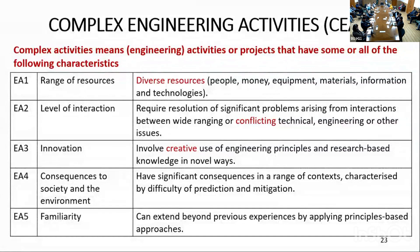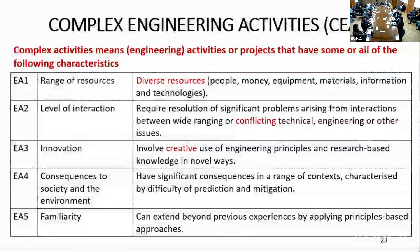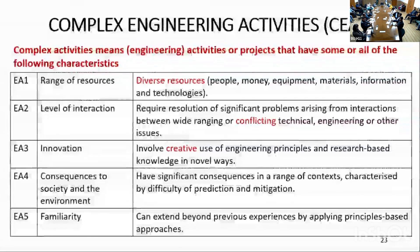Similarly, EA2 is the level of interaction. It involves conflicting requirements and a good number of stakeholders. The activity should have wide-ranging requirements from different stakeholders which may also conflict with each other. EA3 is innovation — any activity should involve something new, creative, or innovative. Innovation is also one of the reflection parameters.